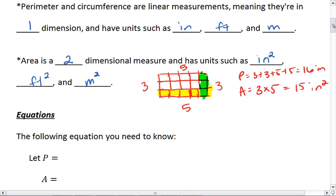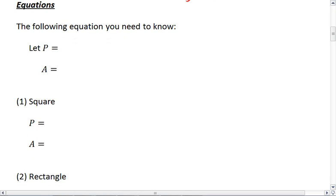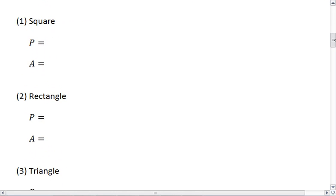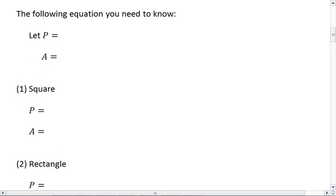This brings us to some formal equations. We're going to talk about the equations for perimeter and area in 4 special shapes: our square, our rectangle, our triangle, and our circle. So in all of these, you want to let P be perimeter and A represents area. Perimeter, or circumference if it's the circle.